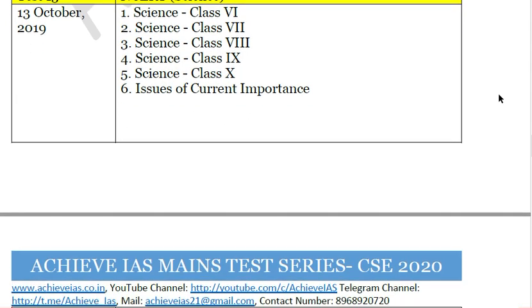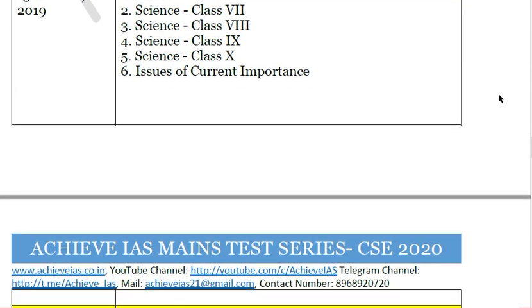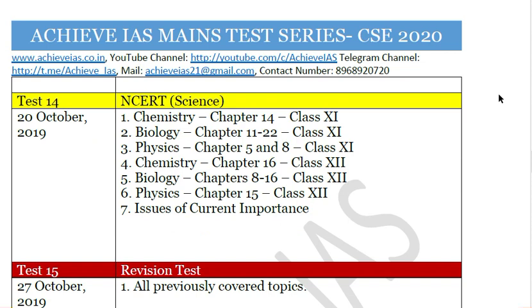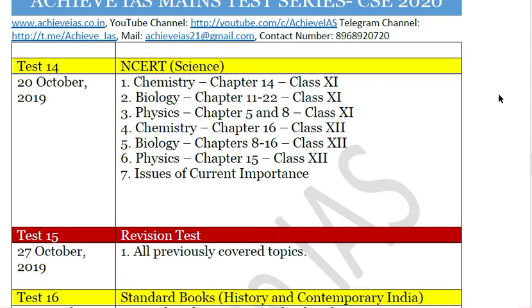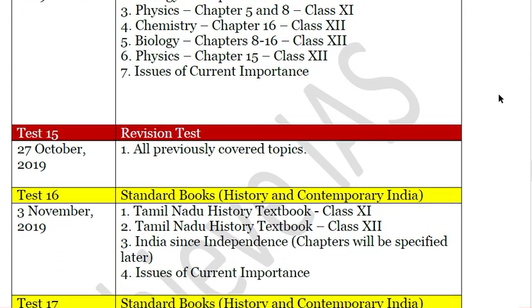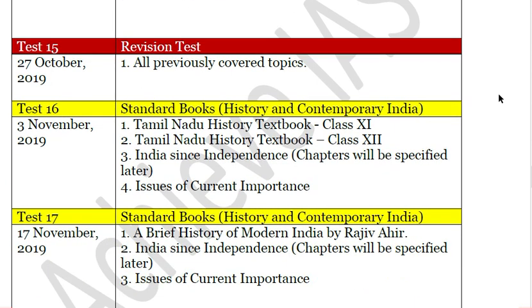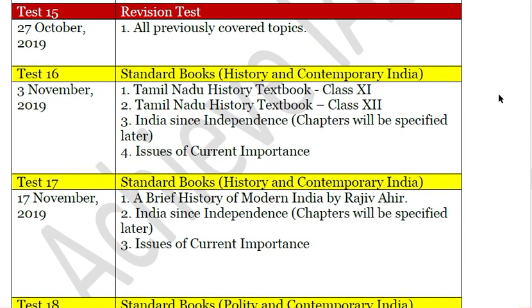Test number 13 covers Science NCERTs from Class 6 to Class 10, followed by select chapters from Class 11 and 12 Science — Chemistry, Biology, and Physics. You will not have to read the entire Class 11 and 12 science books; only a few select chapters relevant to UPSC are required. Test number 15 is a revision test scheduled on 27 October.